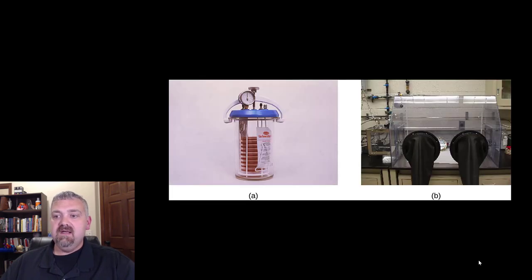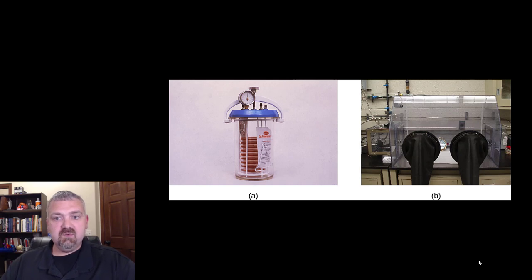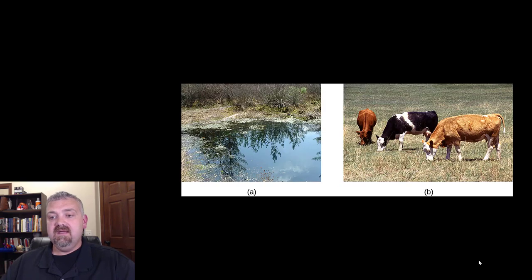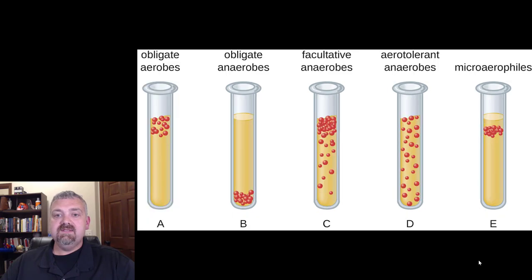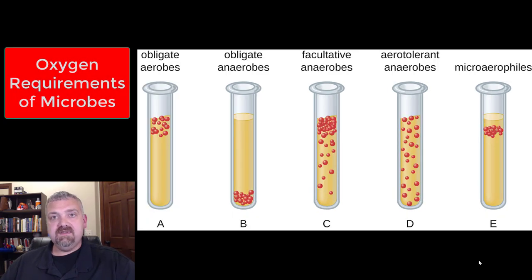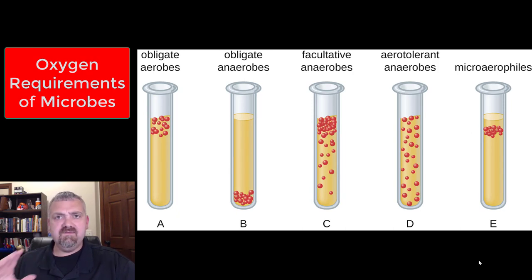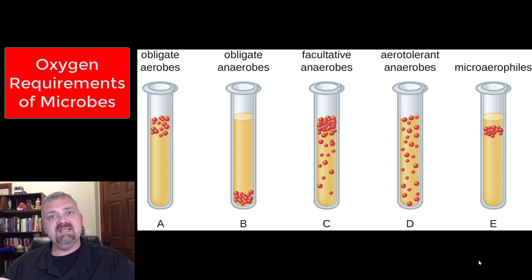I already showed you the catalase image. This would be an example of anaerobic chambers — where if you're going to grow organisms that can't survive in the presence of oxygen, you would put them in something like this. So those are the five different types of microorganisms based on their oxygen requirements. I hope this is a huge help — this is a very important topic. Watch this video again, have a wonderful day, be blessed.